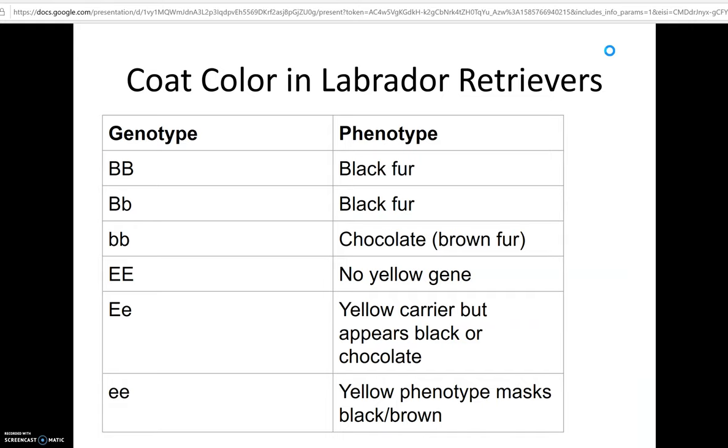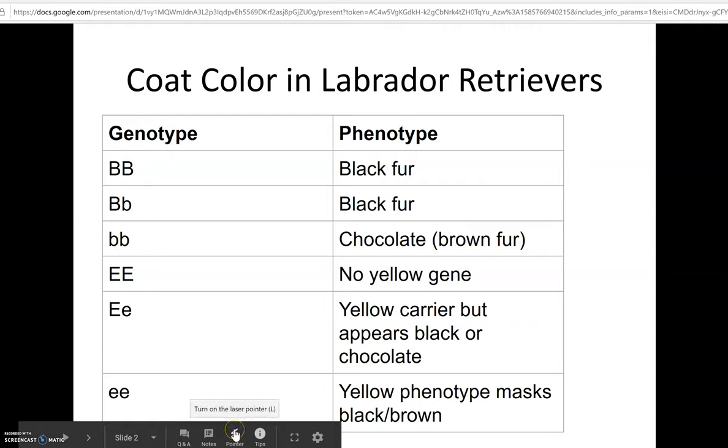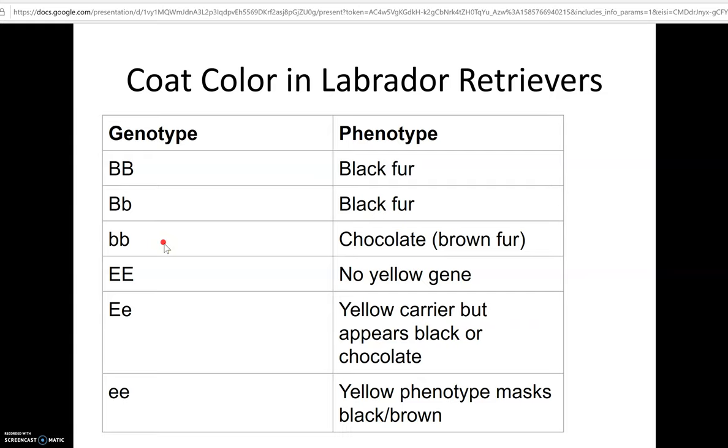Here we have our genotypes. We have black fur represented by the Bs. Capital B is the allele for black, so BB would be homozygous dominant, Bb heterozygous where black dominates the brown, and bb homozygous recessive would be chocolate or brown fur. But there's this other set of genotypes down here with the E gene. These E alleles will override those B alleles.